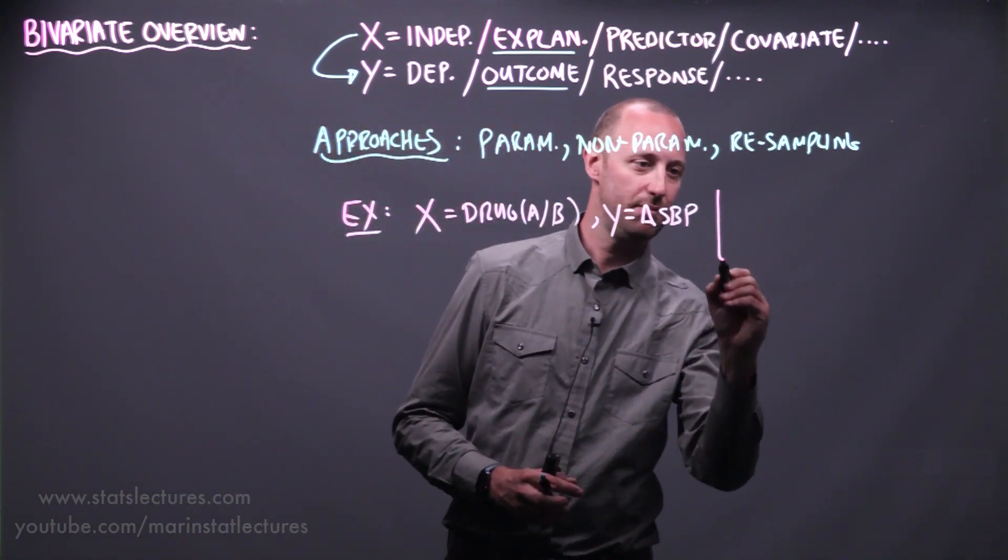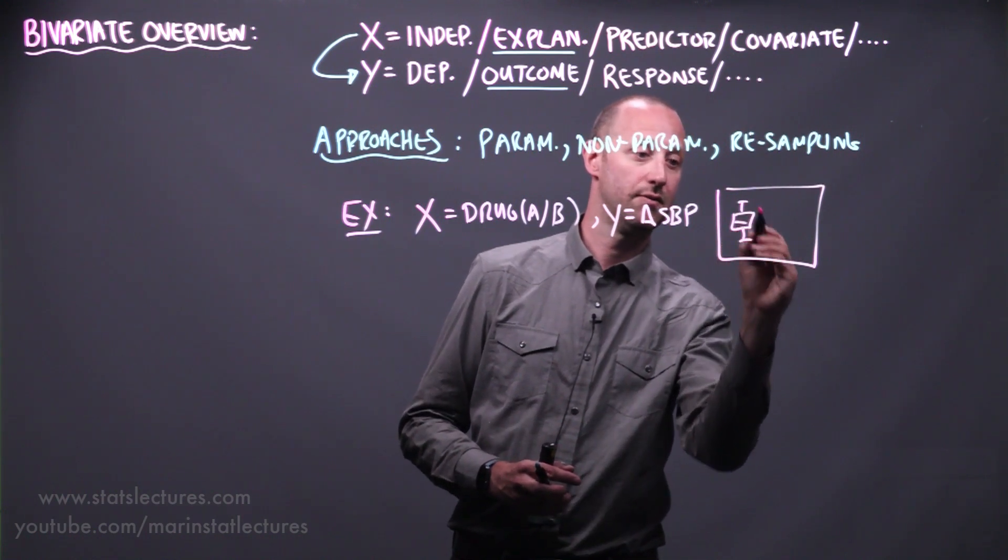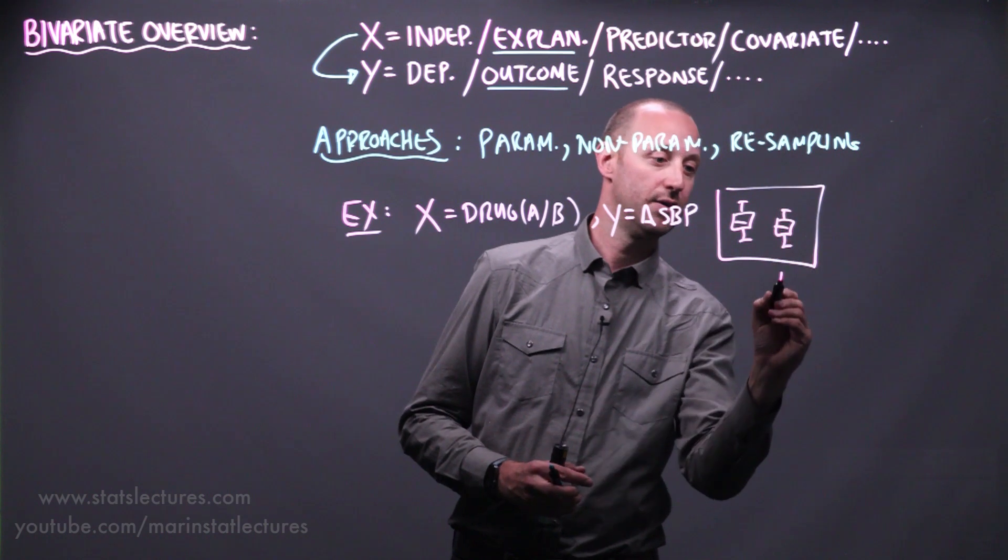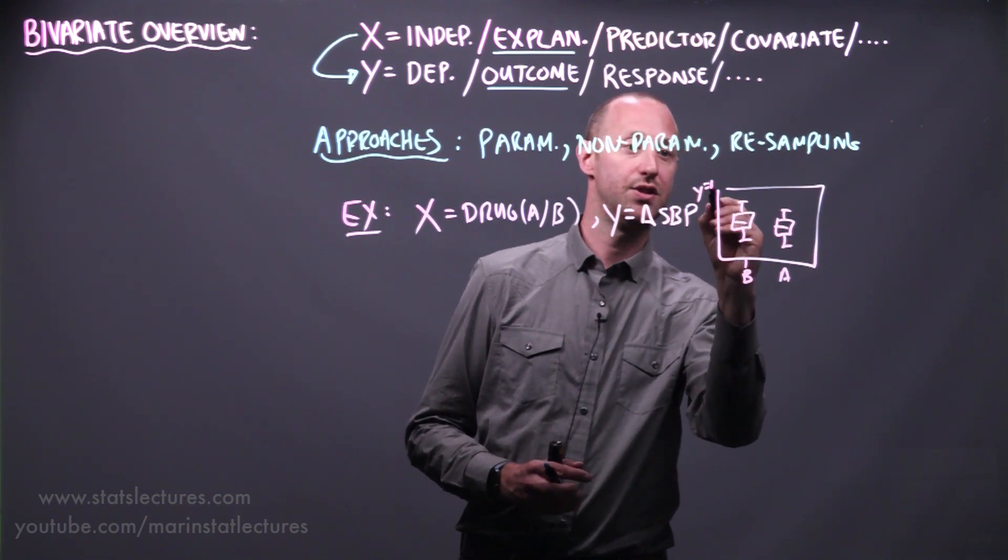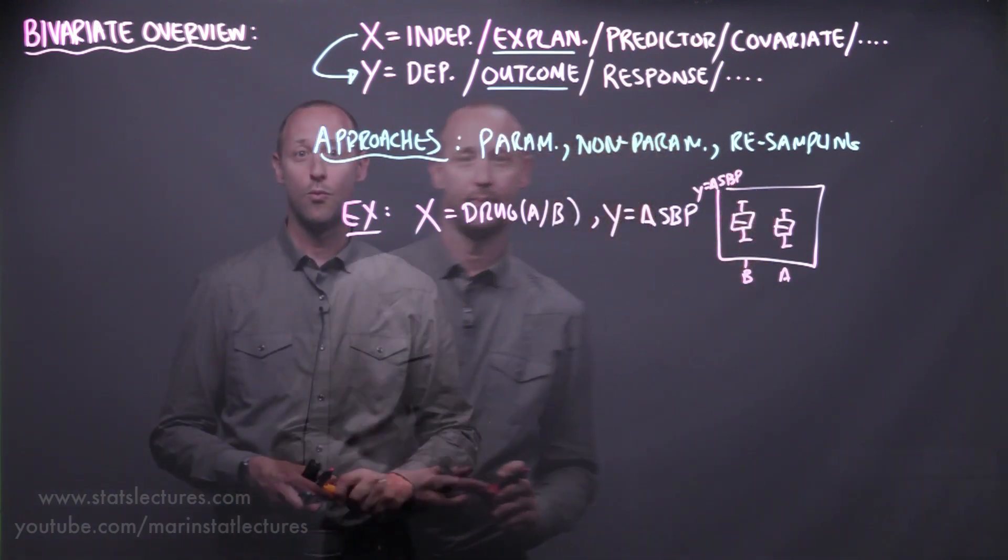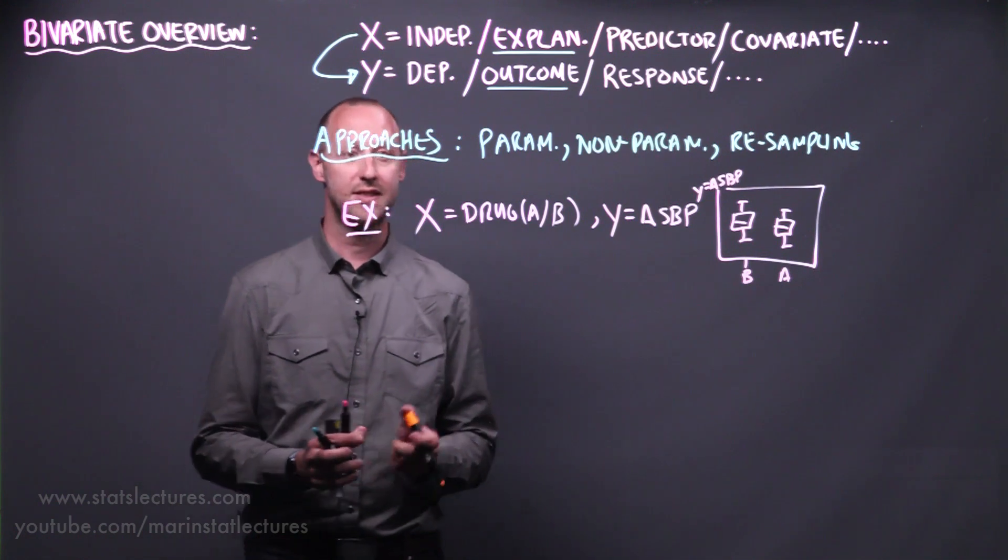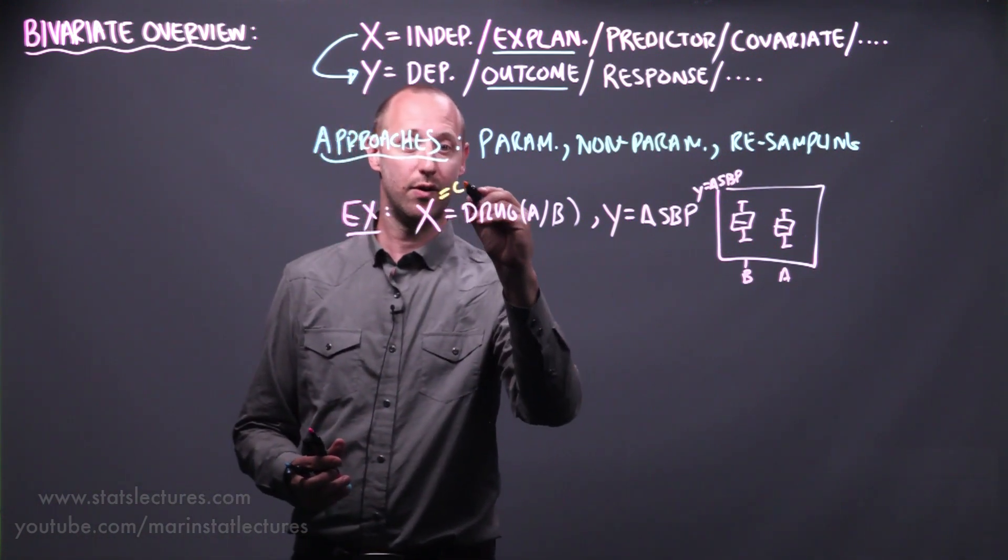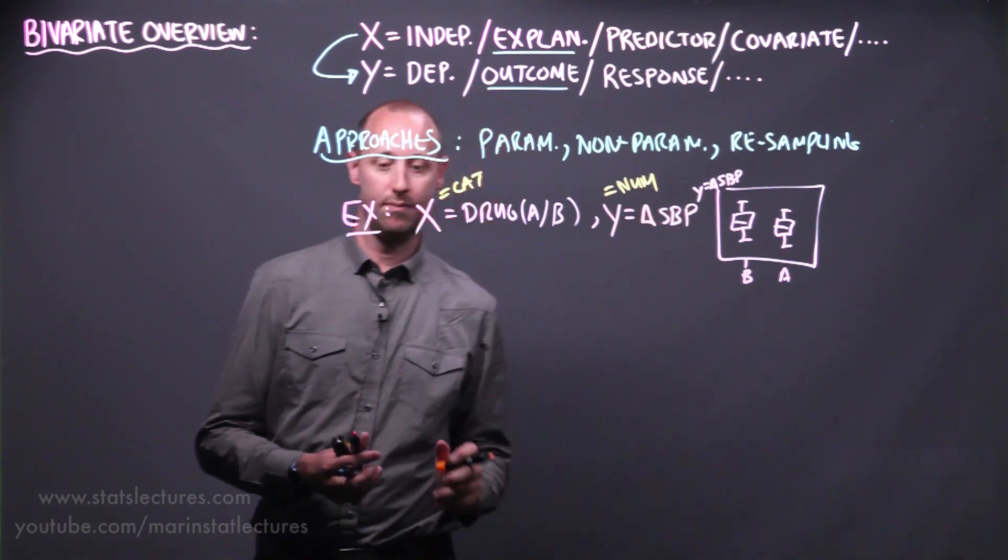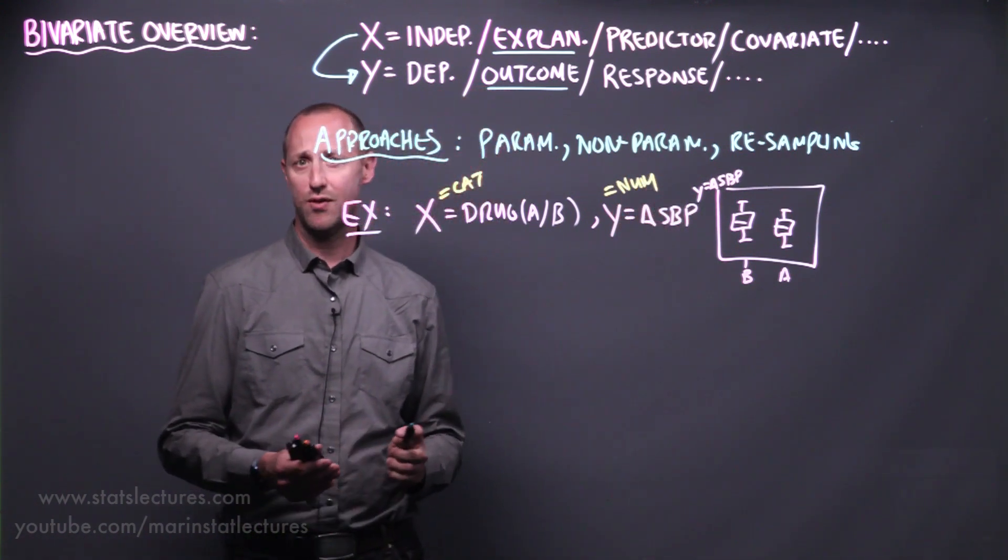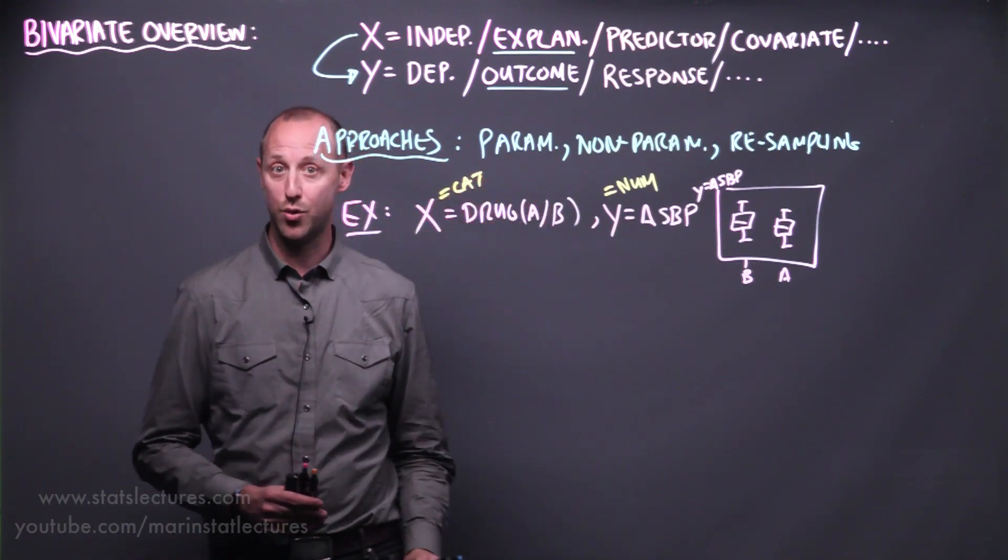To visualize this relationship, we can look at things like side-by-side box plots, comparing drug A and drug B and their change in systolic blood pressure. One thing you'll notice about these types of variables: x is a categorical variable, y is a numeric variable. So we're going to start to discuss different methods of bivariate analysis appropriate for a categorical x and a numeric y.